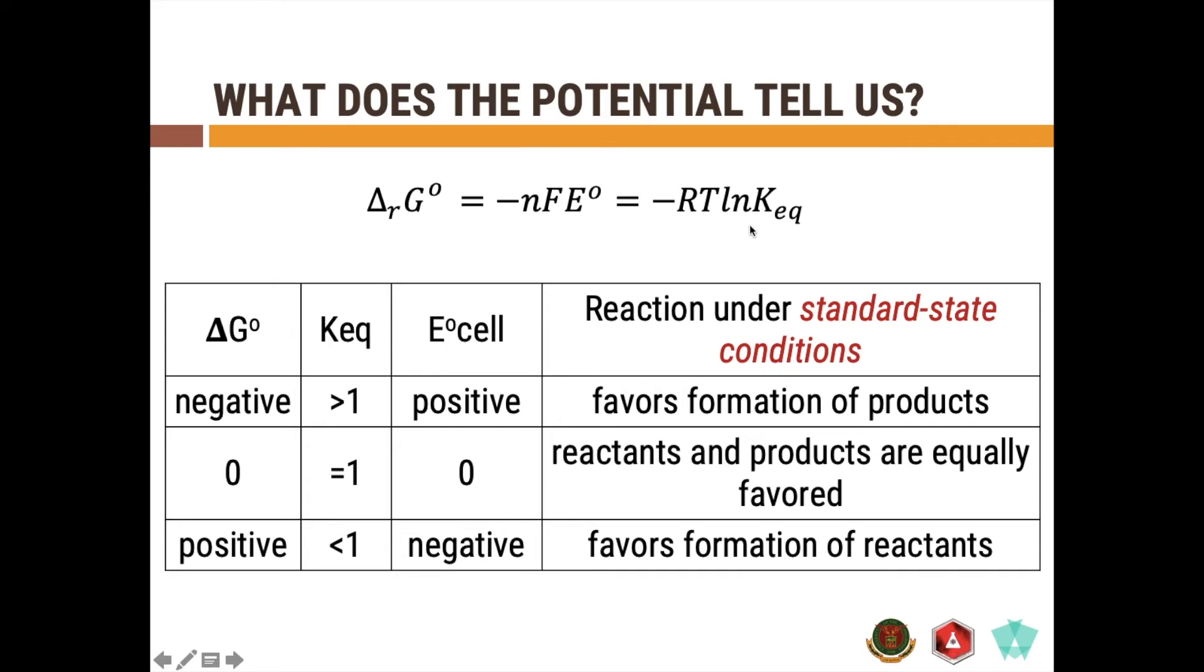...that means you have a negative delta G or the Gibbs free energy for the cell reaction and you have a Keq that is greater than 1. And that would mean that you have a reaction, how you have written it, it will favor the formation of the products under standard state conditions. Okay, so I would like to emphasize the standard state conditions here.